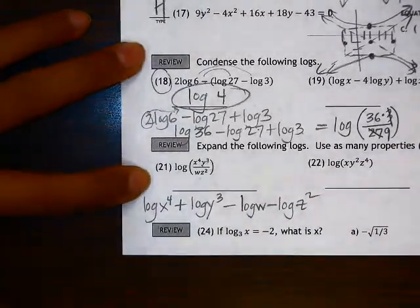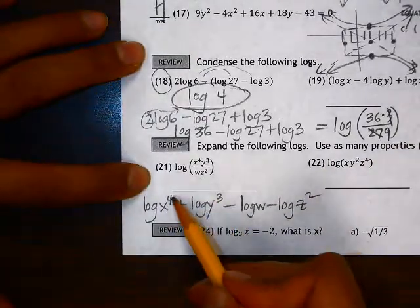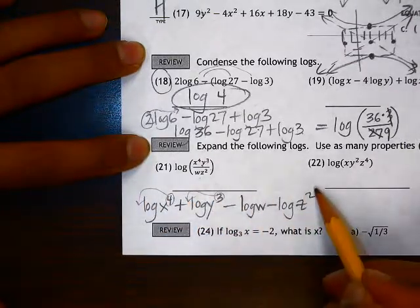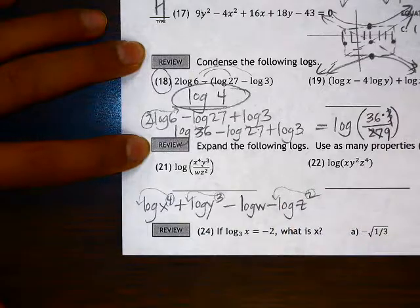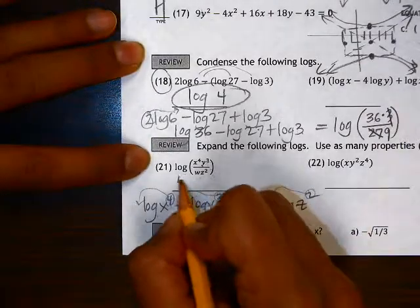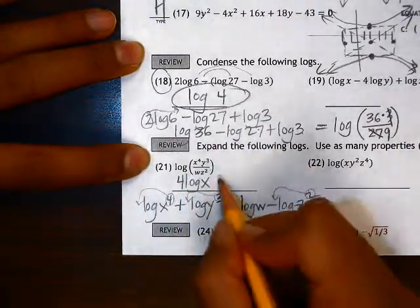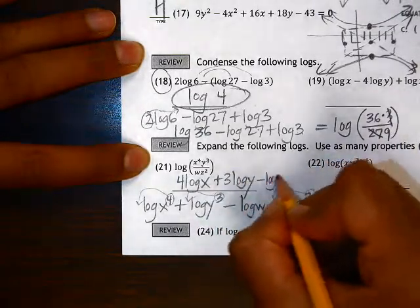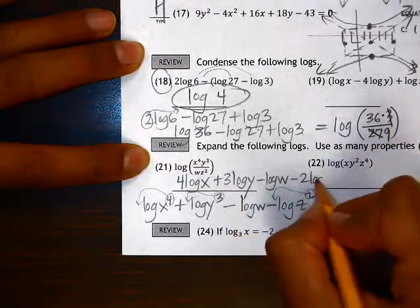To completely expand this, we also need to use the power property, which allows us to take any exponent and move it to the coefficient spot. So we have three exponents here. If we move all of those to the coefficient spot, that gives us 4 log x plus 3 log y minus log w minus 2 log z.